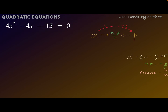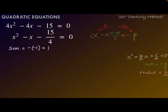Let us take one more example. Suppose the equation is 4x² - 4x - 15 = 0. Here the leading coefficient is not 1, so we divide the equation by 4 to get x² - x - 15/4 = 0. The sum of the roots is 1, and half of the sum is 1/2, which is exactly in between the values of the two roots alpha and beta.